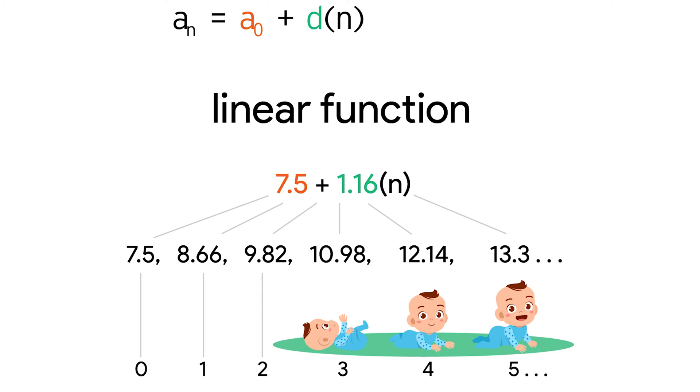What if we start counting at 0? Well, if the starting number changes from a sub 1 to a sub 0, and d doesn't change, because we're still counting by the same amount, then we don't need to multiply by n minus 1. We can multiply by just n to get each term.